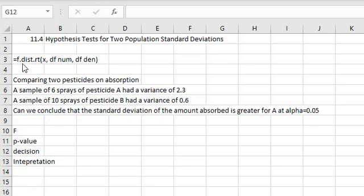The command for this is equals f.dist.rt, for right tail, open a parentheses, then we'll do the test statistic, comma, the degrees of freedom for the numerator, comma, the degrees of freedom for the denominator.